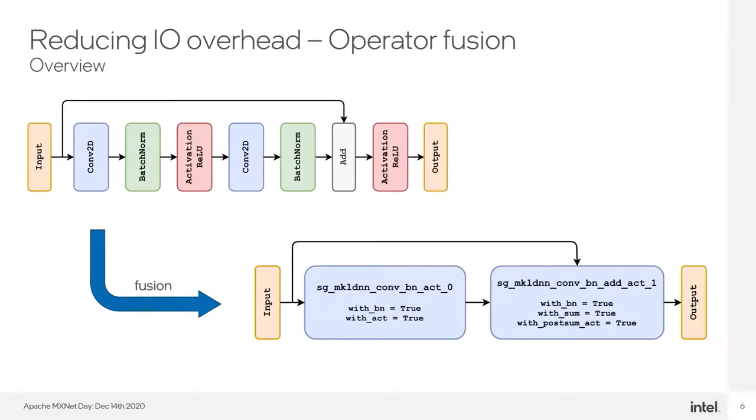Deep learning models consist of many small operations that are memory bound. Let's take a look at how we can optimize them. Almost every model can be represented as a directed graph, where operators and tensors are represented as nodes. Each connection between operators, where the output of a single operator can be input to another one, is represented in the graph as an edge.